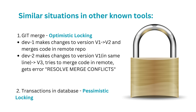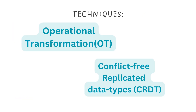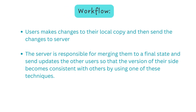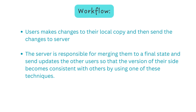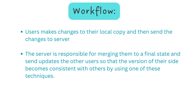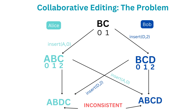In real-time collaboration tools, the server itself has to do the merging so that no data is lost and versions remain consistent. Over the years, two commonly used techniques have emerged: number one, Operational Transformation, and number two, Conflict-free Replicated Data Types (CRDTs). The workflow is: a user makes changes to their local copy, sends the changes to the server, and the server merges those changes to a final state and sends updates to all other users.